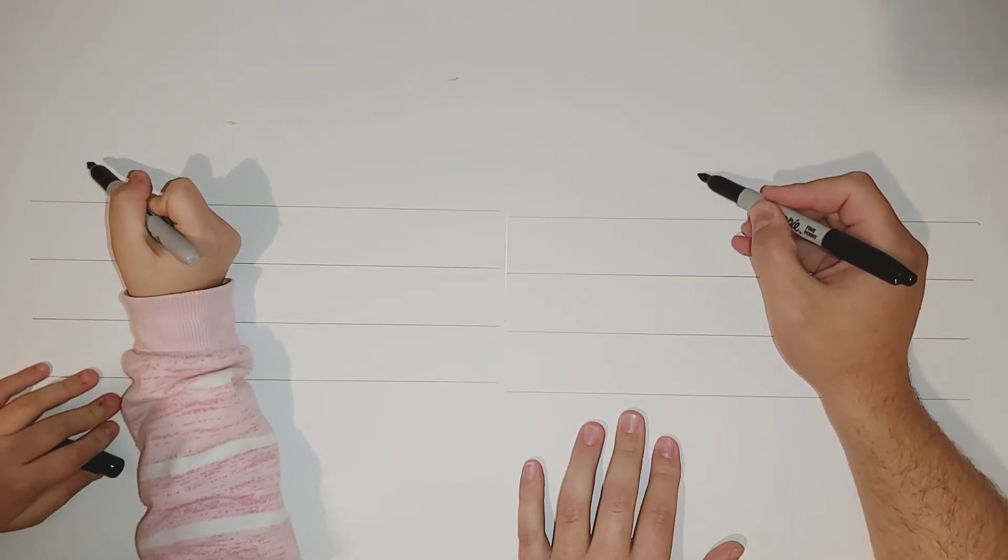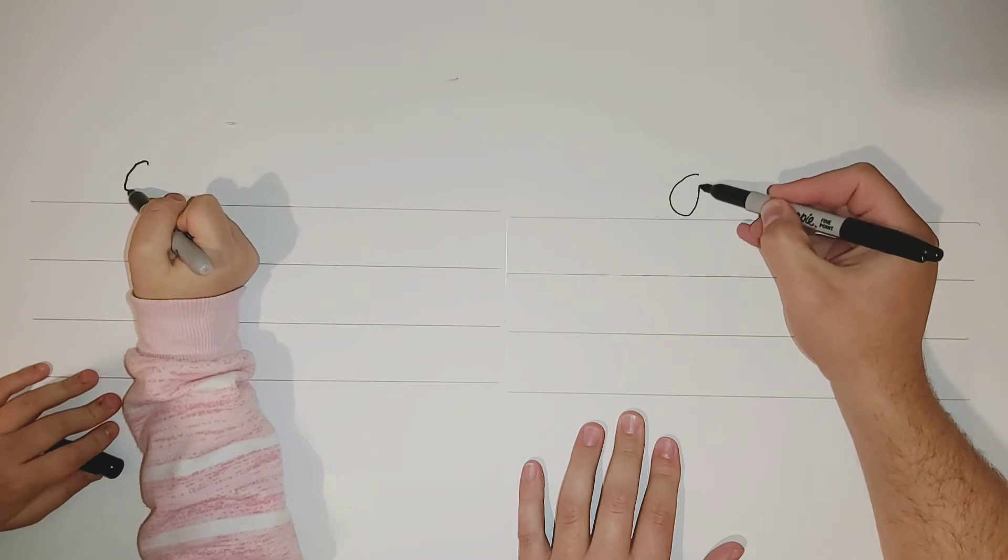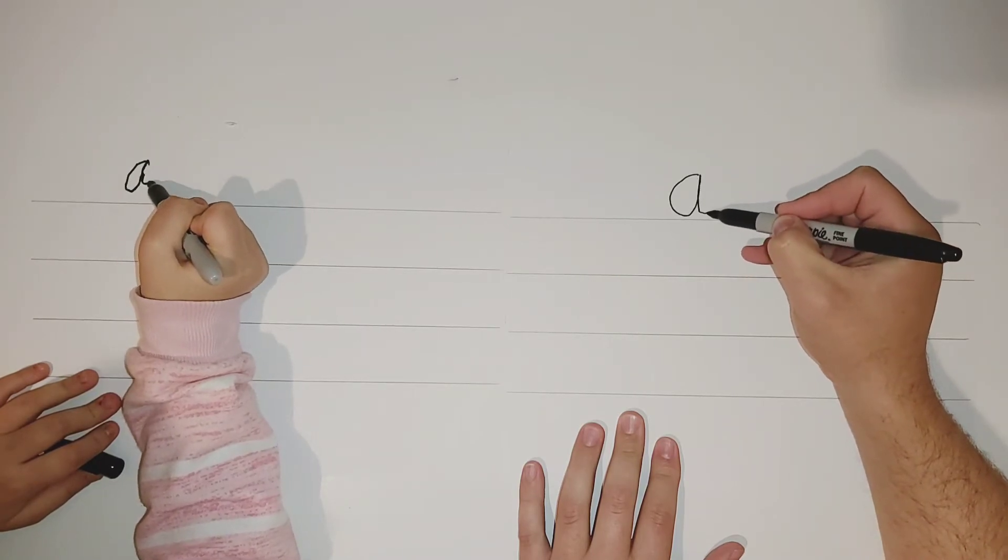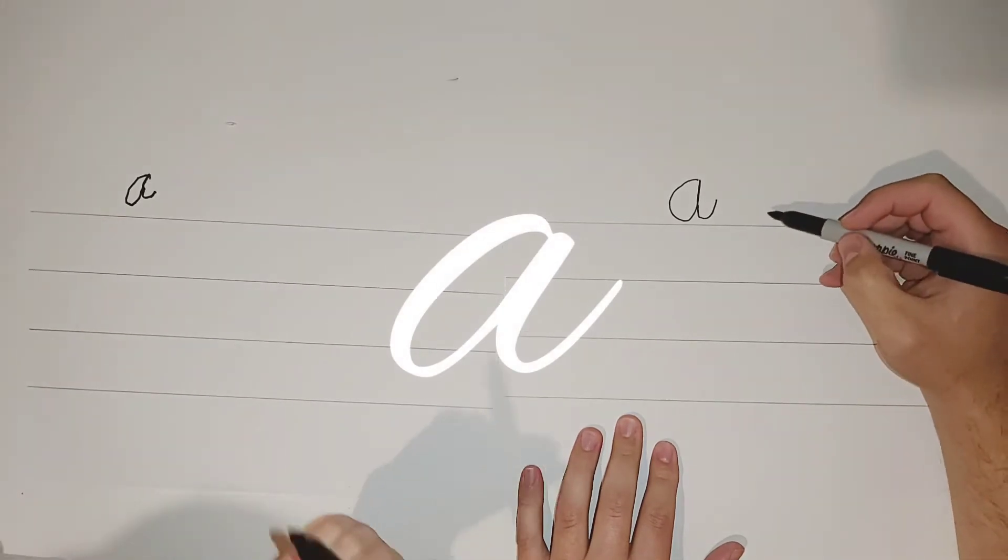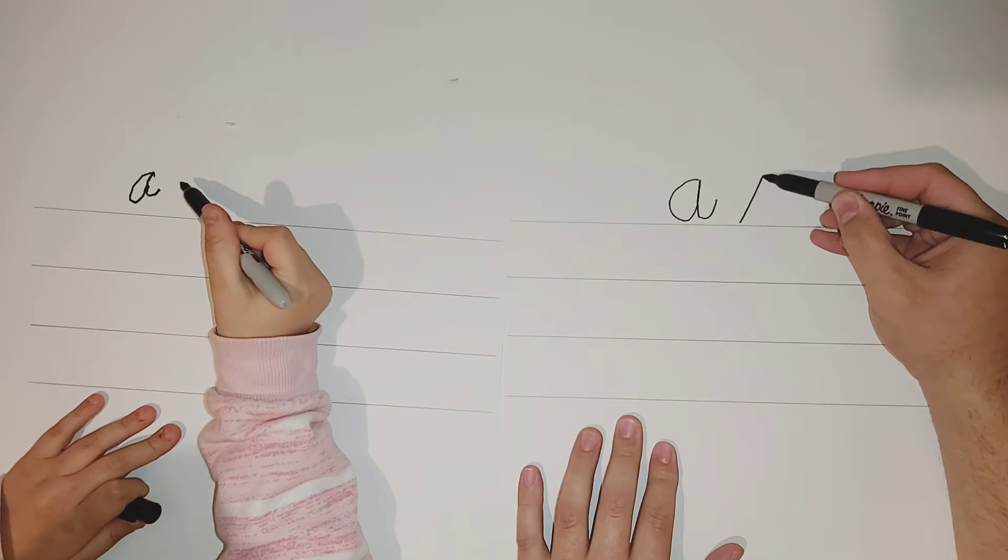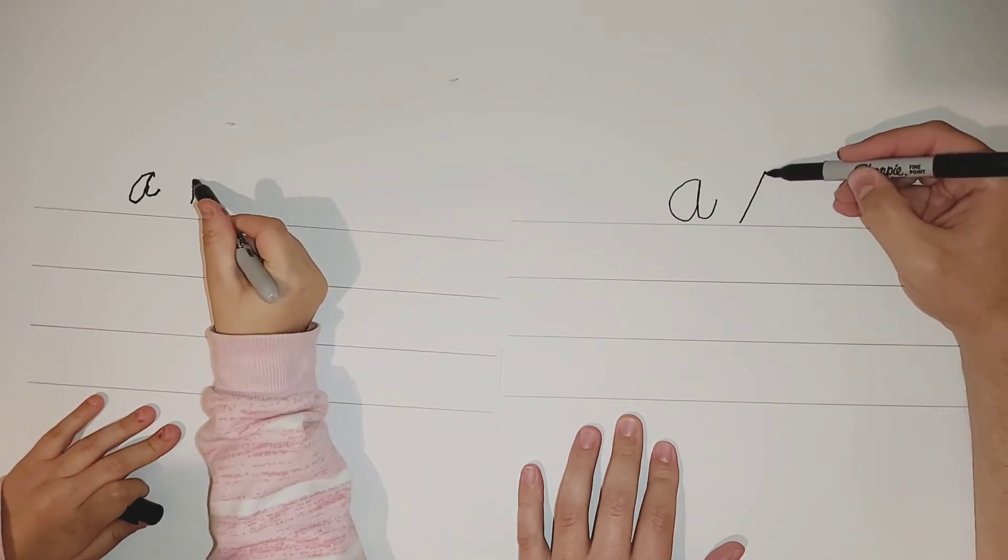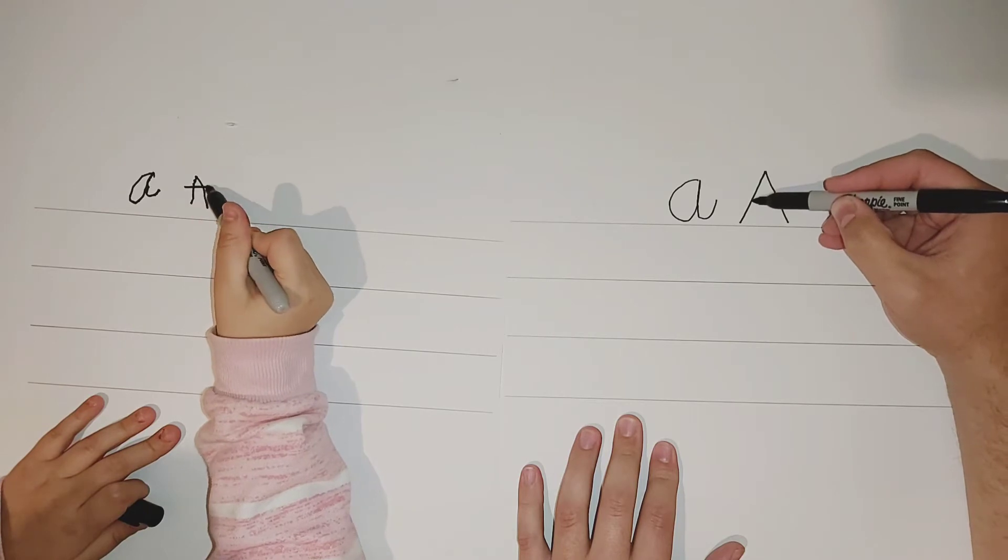Lowercase a is a big curve, straight up, back down and back up. Capital A is an upside down V. Start from the bottom, come back down, and draw a straight line across.